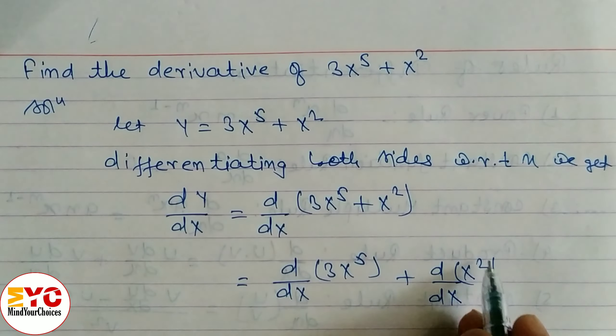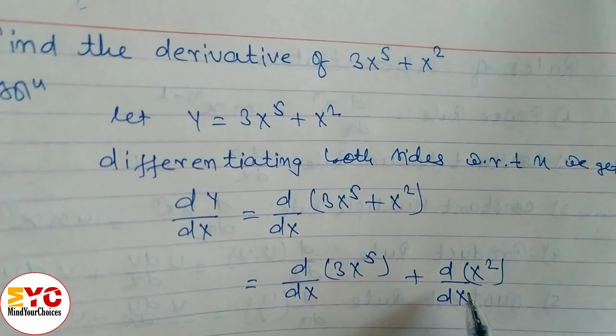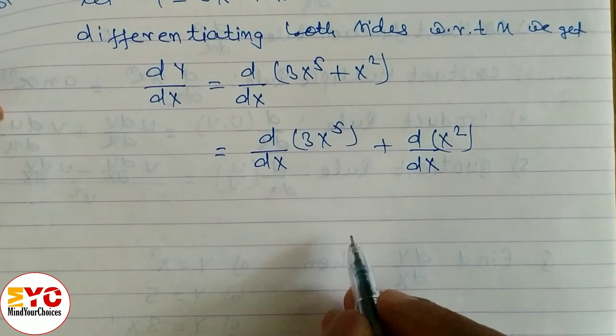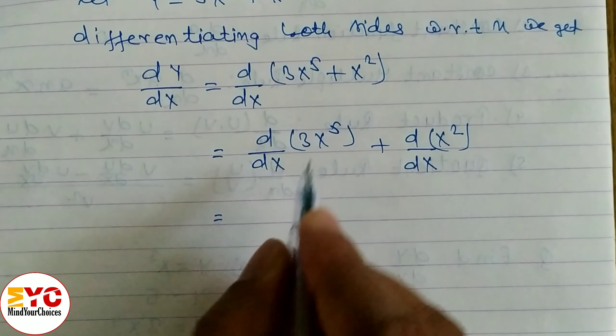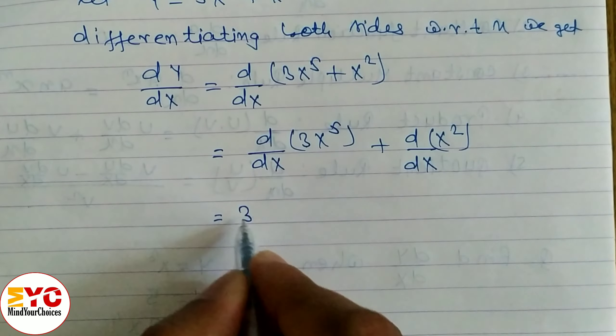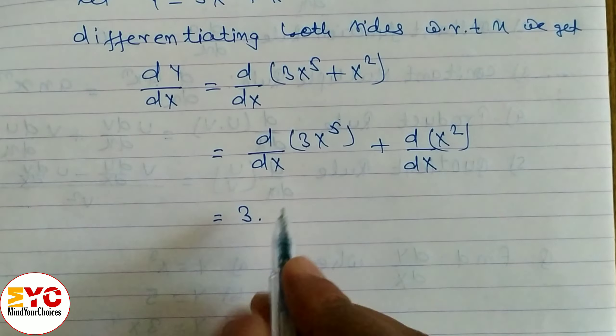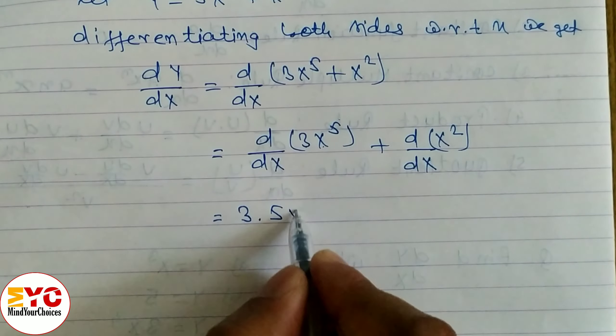So here we have to use constant multiple rule and here we have to use power rule. By using constant multiple rule what we have to do, first of all we have to write constant number, here is 3 so we have to write on 3. After that power here is 5 so we have to write on 5, then variable is x so x